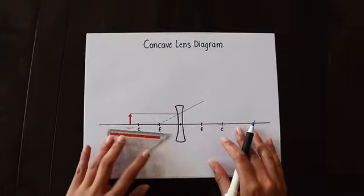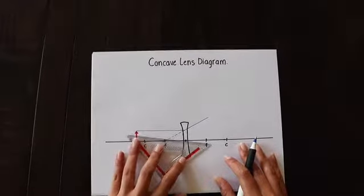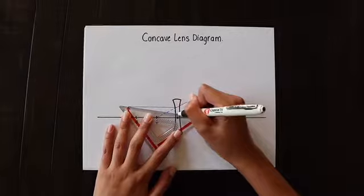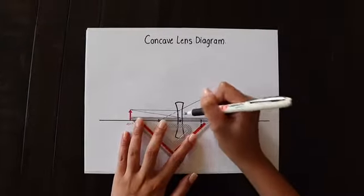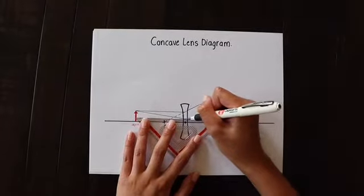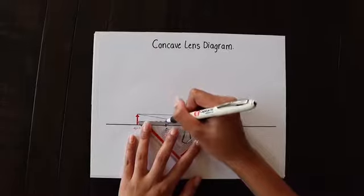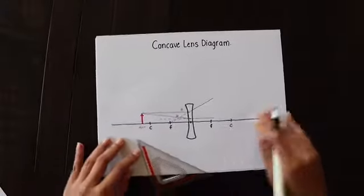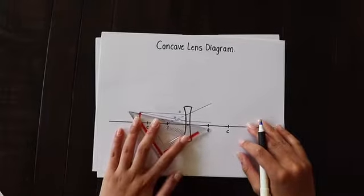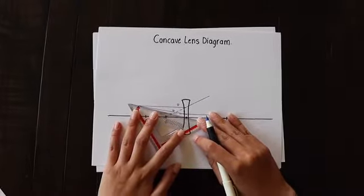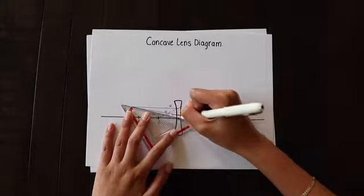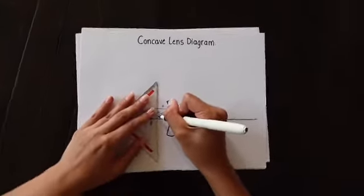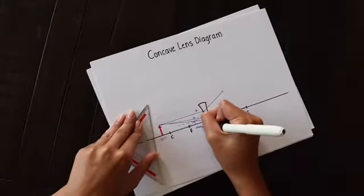The next ray is going to go toward the focal point on the other side of the lens from the top of the object. Same thing — go toward the center of the lens, and then it will refract off parallel. Continue the dotted line on the other side to signify where it was. The third ray is super easy — all you have to do is go straight through the center of the lens. As you can see, they all intersect here, which means the image will be formed there.